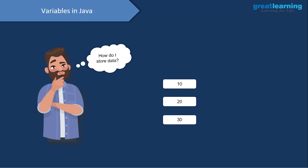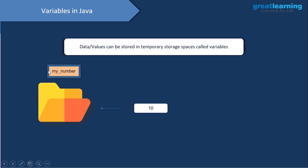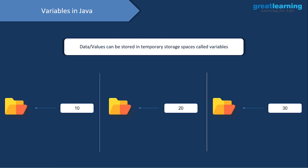Now that we've written our first program, let's understand what variables are in Java. In programming, it's essential to understand what data we're dealing with, and since every programming language deals with a lot of data, it's important to store that data somewhere — and this is where variables come in. You can consider a variable to be a temporary storage space where you store values.